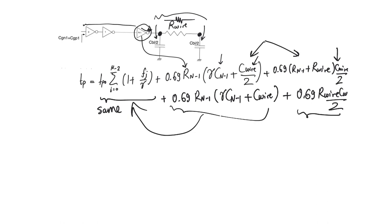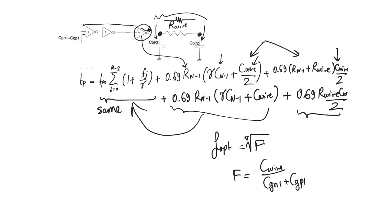This additional term is a constant — a function only of wire capacitance and wire resistance. When differentiating with respect to stage sizes it has no effect, so the optimal electrical effort f_opt is still the nth root of F, where F = C_BL divided by the input capacitance of the first stage. The wire resistance simply adds a constant parasitic delay component — a self-delay of the wire itself. This is not negligible, but there is nothing you can do about it by optimizing the buffer chain; it will always be present.